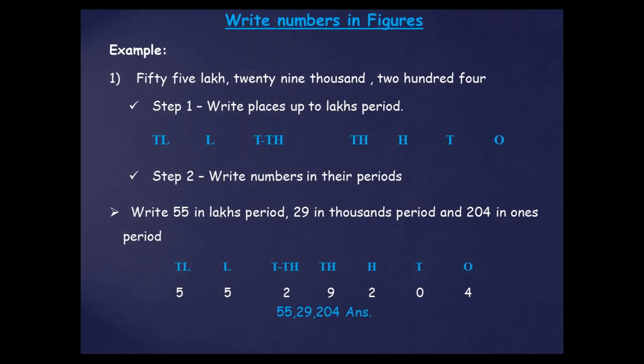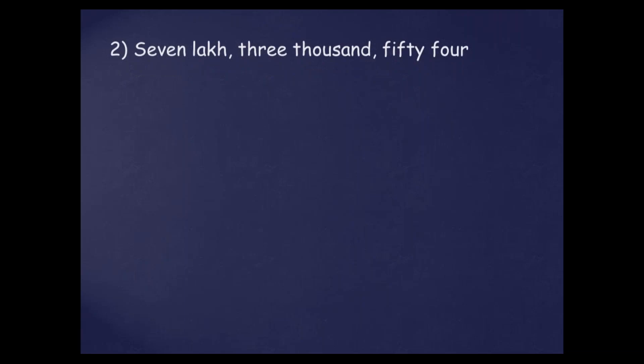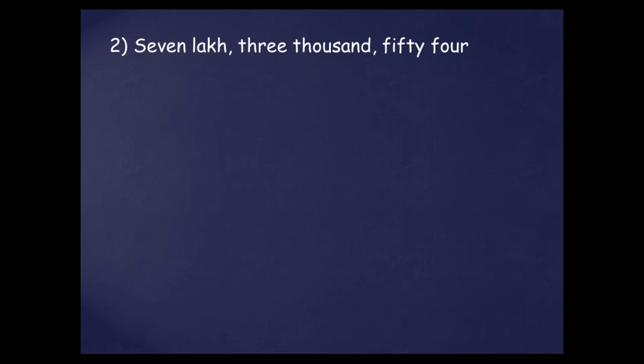So the number will be 55,29,204. Remember that you have to put a comma in the number to separate the periods. Next is 7 lakh, 30 thousand, 54. From the left side, lakh is given, so you have to write the places again up to the lakh period: 10 lakh, lakh, 10,000, 1,000, 100, 10s and 1s. So 7 lakh will be written as 0, 7 — because in the lakh period there are two places, so I cannot write 7 at the 10 lakh place.